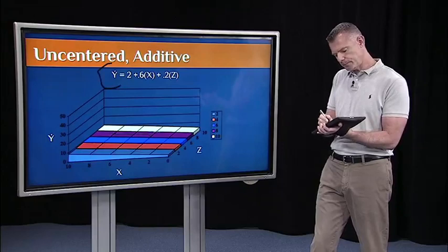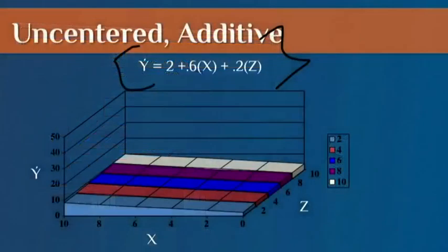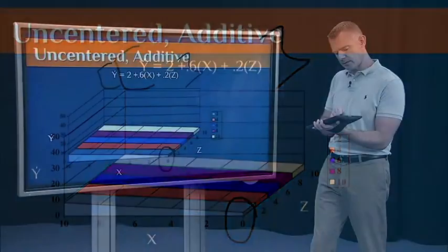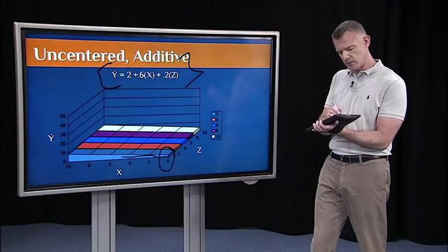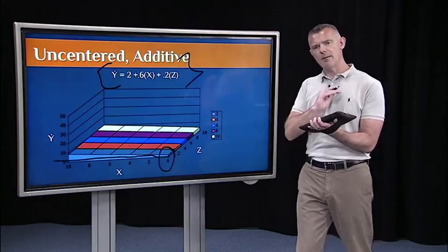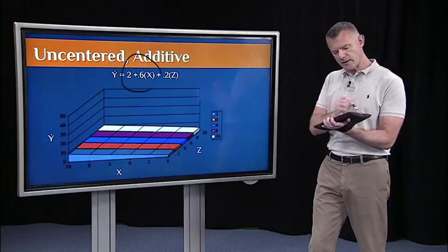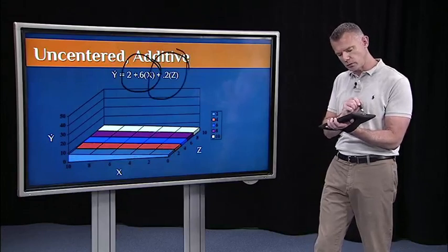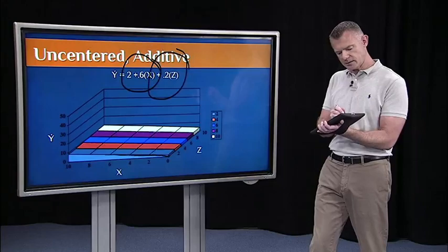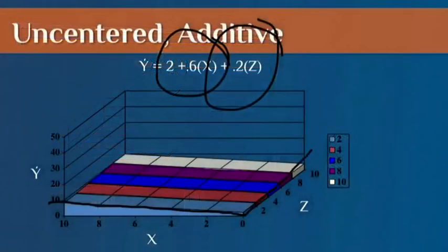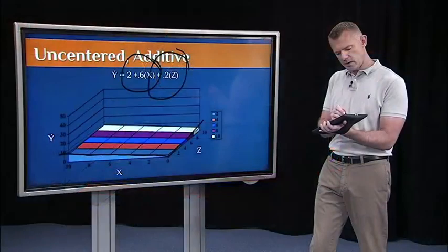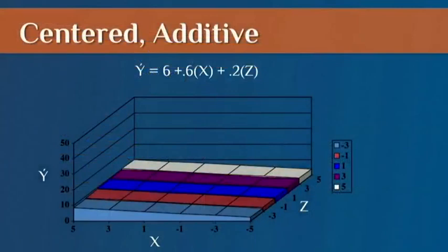If we look at the regression equation, we see the regression constant is 2. That's the predicted score on Y when all predictors, X and Z, are zero. That's right here on our graph. So here's where X and Z are zero. If I go across, you'll see that I'm about 2 on the Y axis. The slope relating X to Y is 0.6. The slope relating Z to Y is 0.2. You can see this slope relating X to Y is a little steeper than this slope relating Z to Y. So now let's center our continuous predictors.